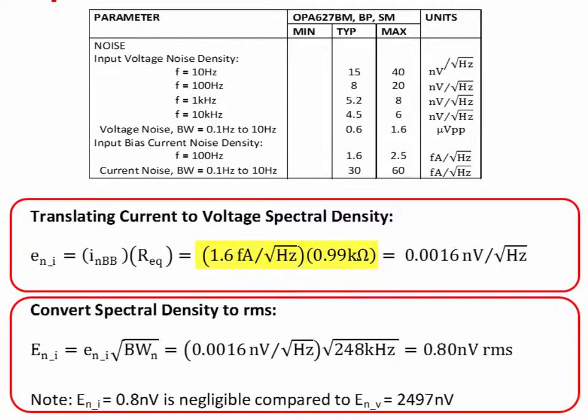Multiplying these together, we get an extremely small noise voltage density of 0.0016 nanovolts per root hertz. Converting to RMS using the noise bandwidth, we get 0.8 nanovolts RMS. For all practical purposes, we could neglect this number, since it is insignificant compared to the voltage noise of 2,497 nanovolts, but we will include it for the sake of completeness. Later on, we will see an example where current noise dominates.